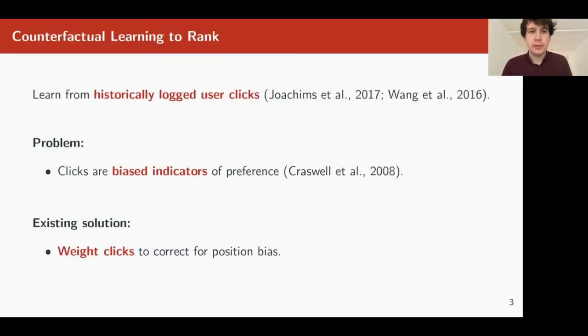First, some background. Counterfactual learning to rank is a family of methods, or an approach, where we have methods that learn from historically logged user clicks. The problem, of course, is that clicks are biased indicators of preference, and the existing solution is to weight these clicks to correct for this bias.